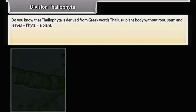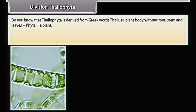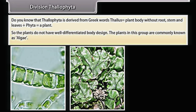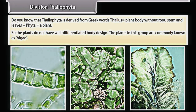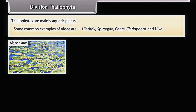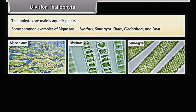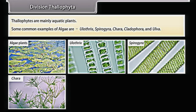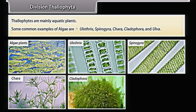Thallophyta is derived from Greek words 'thalus' (plant body without root, stem, and leaves) and 'phyta' (a plant). The plants in this group do not have well-differentiated body design and are commonly known as algae. Thallophytes are mainly aquatic plants. Some common examples are Ulothrix, Spirogyra, Chara, Cladophora, and Ulva.